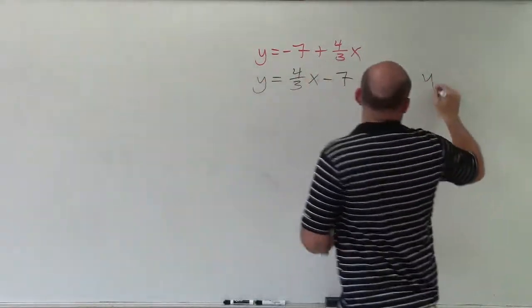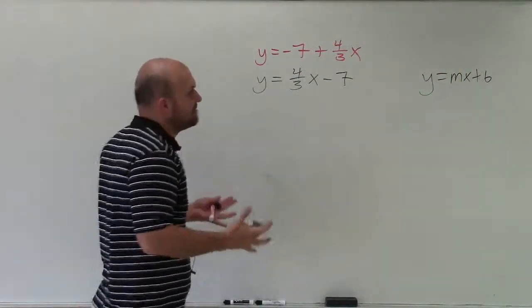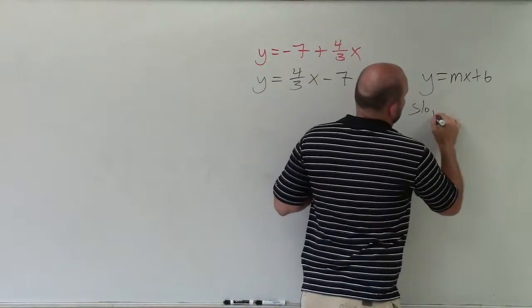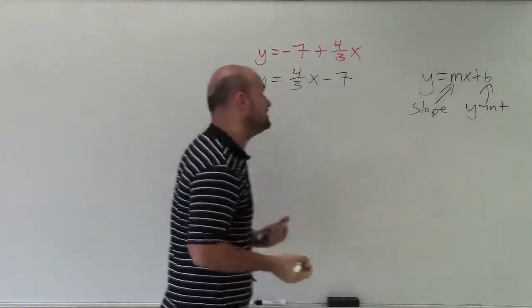Now this looks like the equation that we know of as mx plus b. And when we have something mx plus b, it's very important for us to remember m represents the slope and b represents the y-intercept.